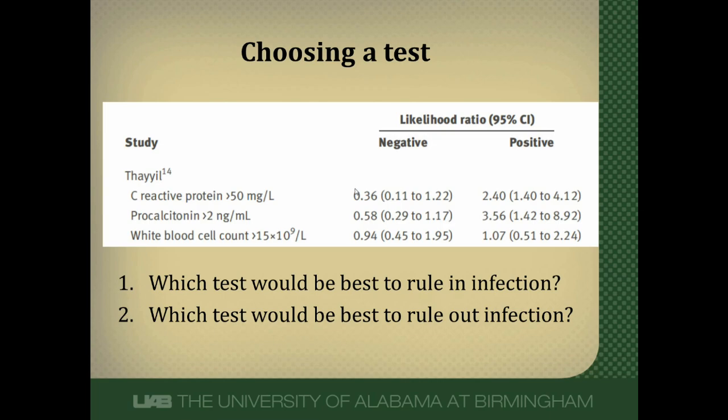The second point this table shows is that different tests often have different roles. To rule in, our best test was procalcitonin, but to rule out, C-reactive protein was the best. It's uncommon to find one test that is great at both ruling in and ruling out disease. Just as with sensitivity and specificity — sensitive tests rule out disease, specific tests rule in disease — here we choose different tests based on their likelihood ratios depending on our goal.